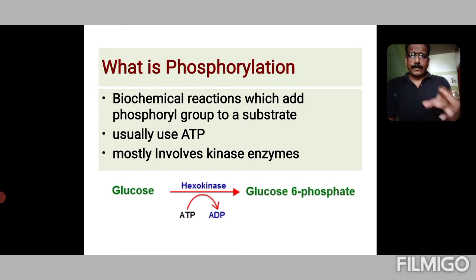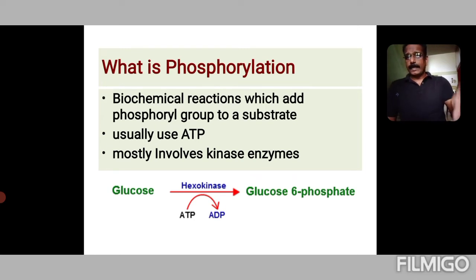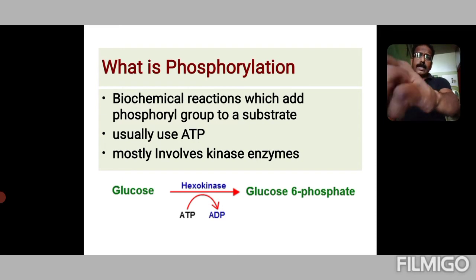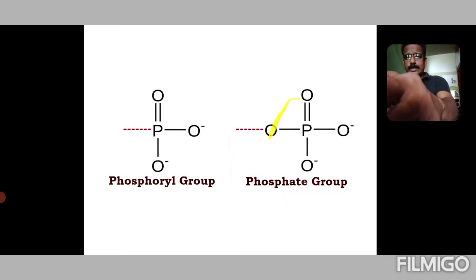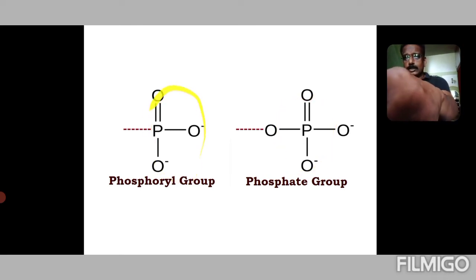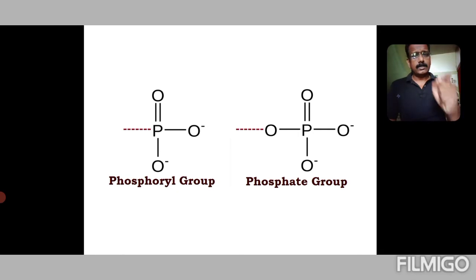When we say phosphoryl group, it is not actually the phosphate group that is transferred — it is the phosphoryl group. The difference between phosphate group and phosphoryl group can be seen here. The phosphate group is the one which is attached to a substrate, whereas the phosphoryl group is the one which is transferred from a substrate to ADP or to another substrate.